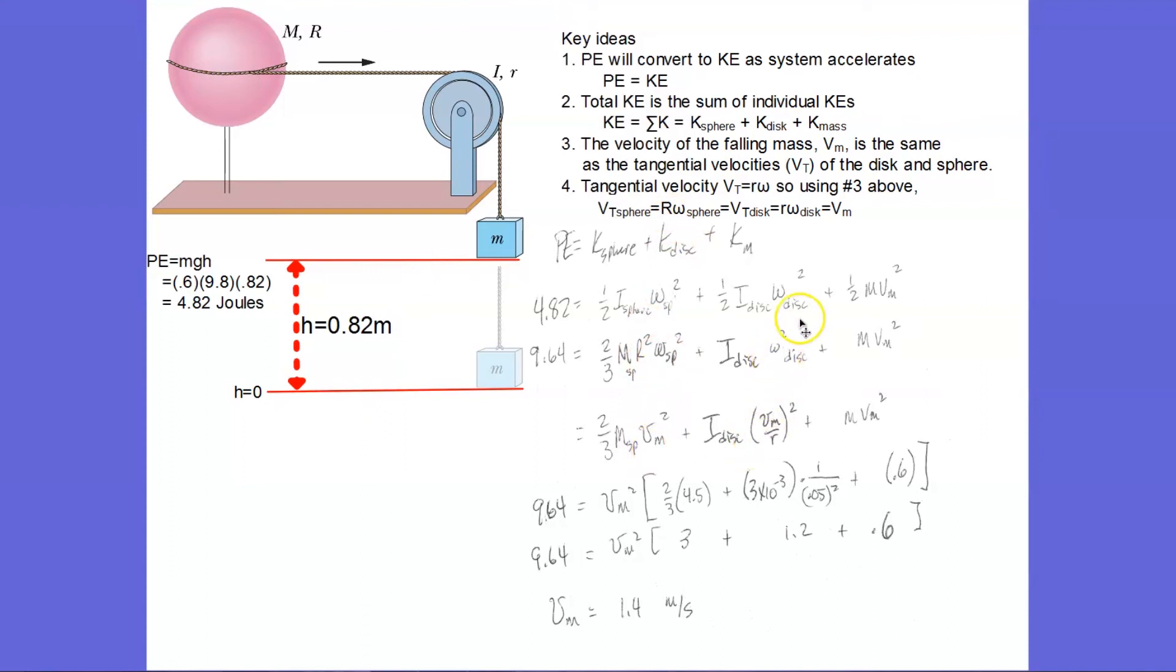And then omega of the disk, I see right here, I can divide the r to the other side. So omega of the disk is the velocity of the mass divided by r. So I make that substitution there. And now you see I only have vm as my only unknown in the equation.